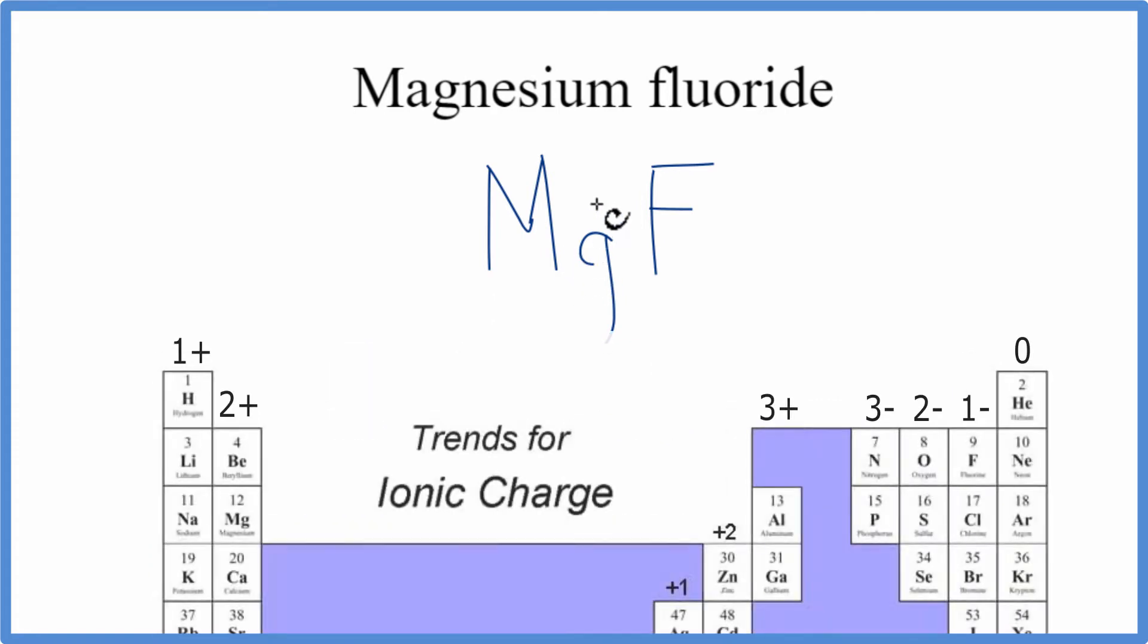So we go back to the periodic table. We can see magnesium, that has a 2 plus ionic charge, and then fluorine, that has a 1 minus charge.